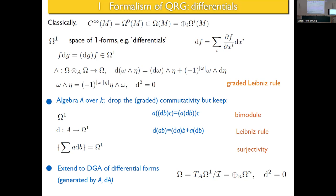There's a d operator obeying the Leibnitz rule — this really tells you to have differential calculus — and Ω¹ should be spanned by differentials like this. There's a surjectivity condition; if you work with DGAs in other contexts you wouldn't usually have surjectivity, but if you don't, you can just look at the image and that defines a proper calculus in our sense inside a DGA. You can extend a first-order one to a DGA; there's at least one canonical way given Ω¹, but there are other ways also.